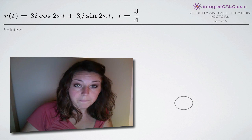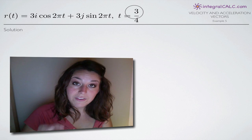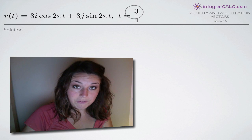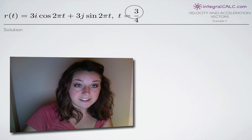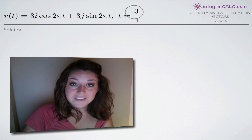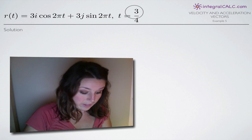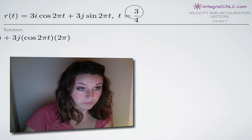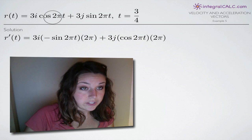In this particular problem, we're going to be plugging in t equals 3 fourths into our first derivative and second derivative to simplify and find the velocity and acceleration vectors. The first derivative is how we go about finding the velocity vector, so we'll go ahead and start with the first derivative of our original function.